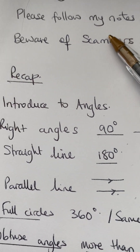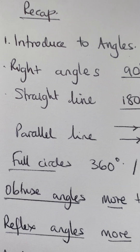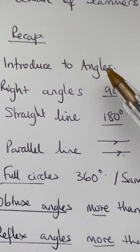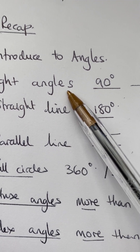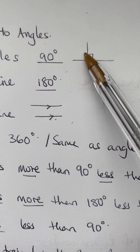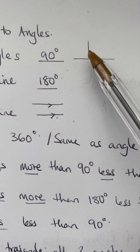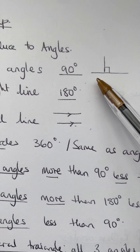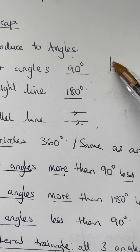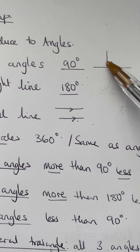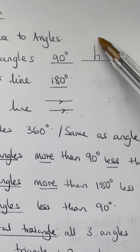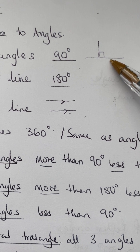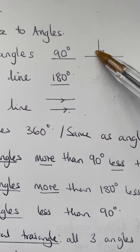Recap from the last lesson: I introduced you to angles and showed you right angles, which are 90 degrees marked with a small square. The horizontal and vertical lines meet forming 90 degrees. If you see this sign in a triangle, one angle is 90, and the other two angles will also add up to 90, because angles in a triangle always add up to 180.